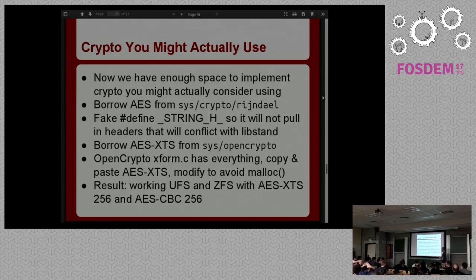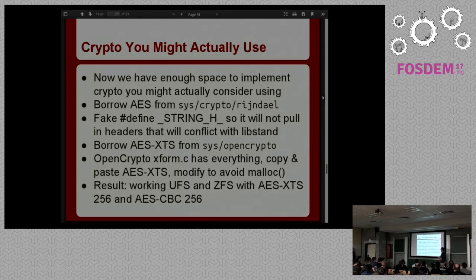Now that I had solved the size limit and whacked all that together, I could boot ZFS from an AES-128-encrypted volume. But that's not the disk encryption people want to use — you want AES XTS because it's faster and designed for disk encryption, or at least AES CBC 256. So now that I didn't have the space constraint anymore, I could ditch the Tiny AES implementation and get a real one. I actually stole the canonical one from the kernel.